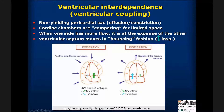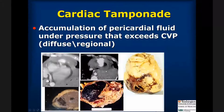The septum is going to move in a paradoxical or bouncing fashion, accentuated in inspiration. In inspiration, the intrathoracic pressures, which are negative, become even more negative. Therefore, there's more inflow of blood through the tricuspid valve from the right atrium into the right ventricle, and the flow through the mitral valve is diminished. During exhalation, the opposite occurs: compression of the right ventricle, collapse of the right atrial chamber, and more flow through the mitral valve.